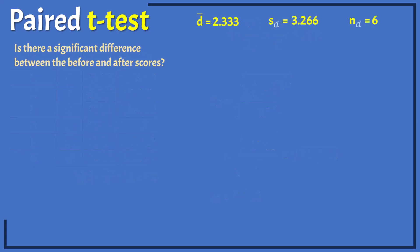Now to test if there is a significant difference in the before and after scores, the null hypothesis would be that there is no difference. That is, the population mean difference is equal to 0. And the alternative hypothesis would be that the mean difference is not equal to 0, because testing for a difference suggests we are conducting a two-tailed test.